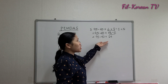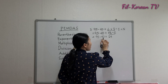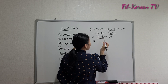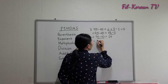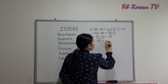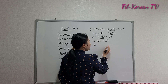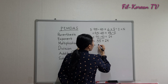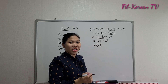Two operations left. Since subtraction and addition rank equal, we do from left to right. We will do subtraction first: 95 minus 40 is 55. Then the last operation is addition: 55 plus 24. The final answer is 79. This is the correct answer.